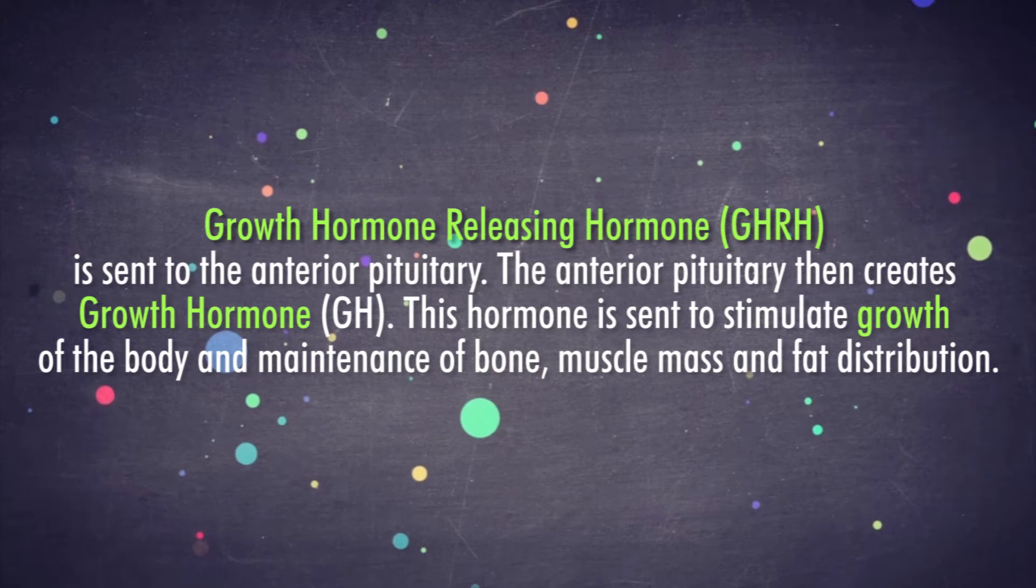The anterior pituitary then creates thyroid-stimulating hormone, TSH. This hormone is sent to the thyroid gland to produce its specific hormones. Growth hormone-releasing hormone, GHRH, is sent to the anterior pituitary. The anterior pituitary then creates growth hormone, GH. This hormone is sent to stimulate the growth of the body and maintenance of bone, muscle mass, and fat distribution.